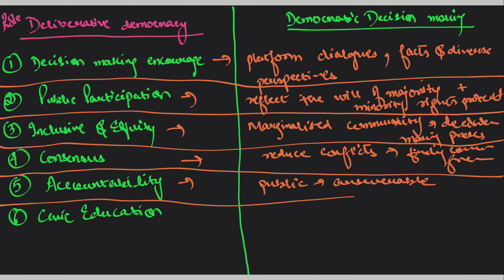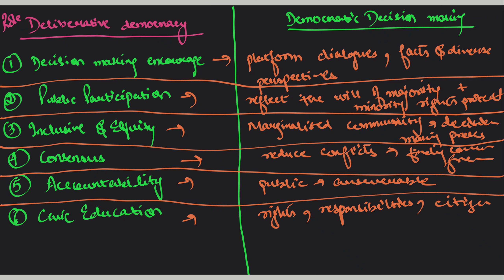Civic education में basically यही सारी चीज़ें आती हैं — आप democratic process के लिए awareness लेकर आते हो। Vote देने कैसे जाना है, अपने rights क्या-क्या हैं, responsibilities क्या हैं — इसके बारे में aware कराना। और citizens किस तरीके से meaningfully इस पूरे democratic decision-making process और governance का part बन सकते हैं — वो चीज़ें समझाना। ये आपके pointers बन गए।